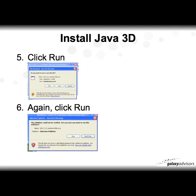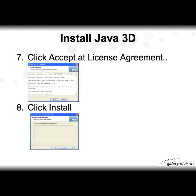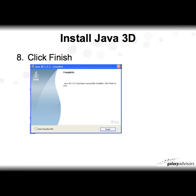Click Run in the window, then click Run again. Next, click Accept at the License Agreement. Step eight is to simply click Install. Finally, click Finish, and that will complete the Java 3D 1.5.2 installation.